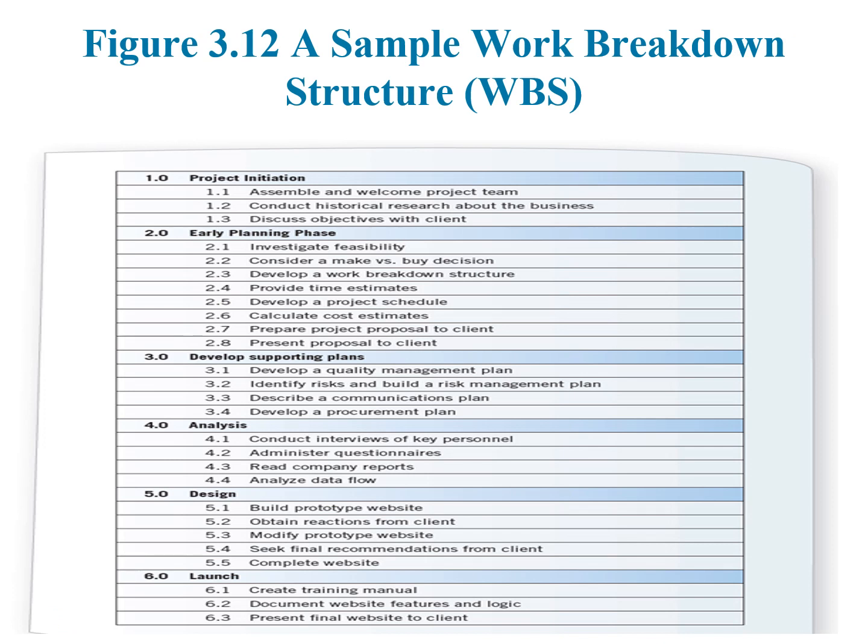Figure 3.12 shows a sample work breakdown structure. We have main themes: project initiation, early planning phase, develop supporting plans, analysis, design, and launch. Under each main phase or deliverable outcome we have several activities — for example, assemble and welcome the project team, conduct historical research about the business, and discuss objectives with the client. These activities are manageable and easy to assign to a person or group.